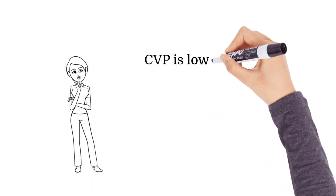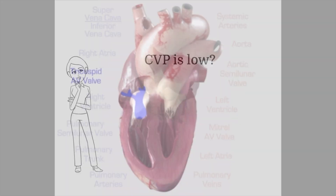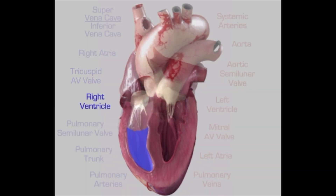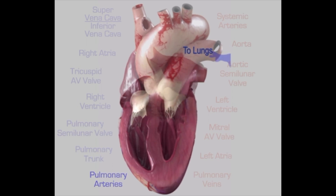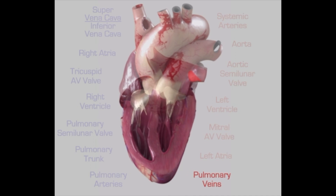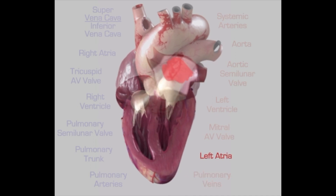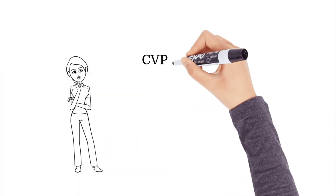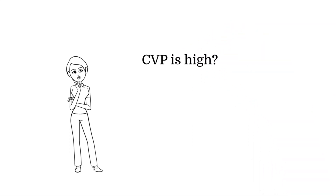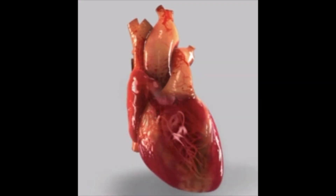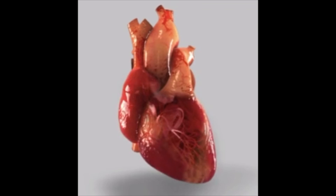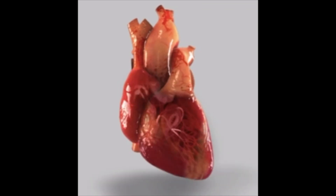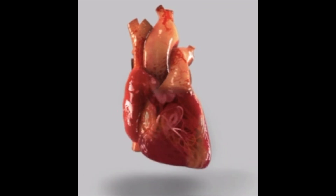If the CVP is low, it means the amount of blood returning to the heart is low, or there is a problem with vascular tone, heart rate, or ventricular contractility. If the CVP is high, it means the amount of blood returning to the heart is high, there is fluid overload, or there is a problem with vascular tone, heart rate, or ventricular contractility.